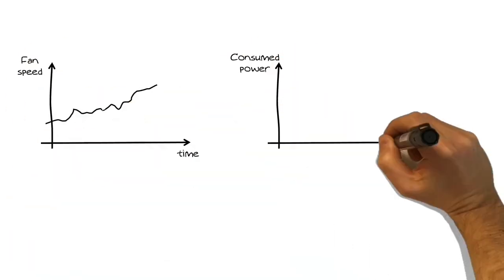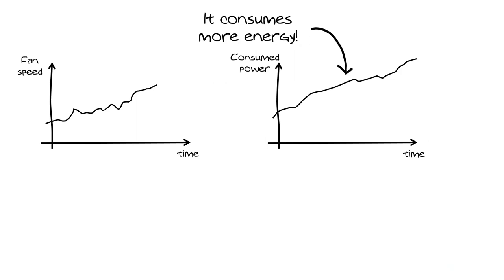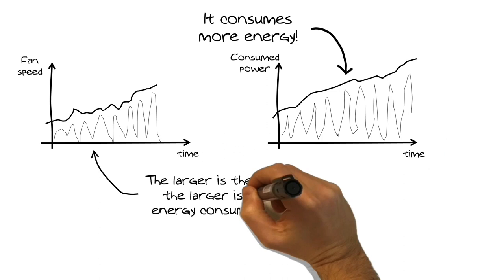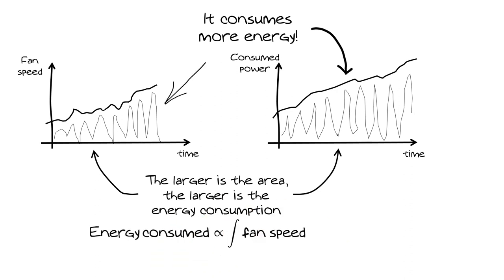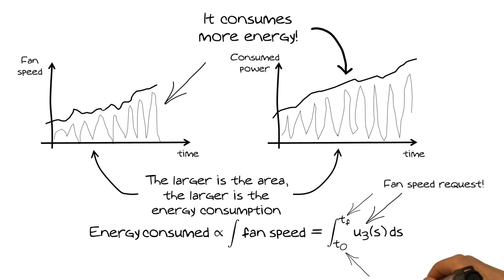We assume that for this specific fan, the higher the speed, the higher the power consumed. Therefore, to estimate the energy consumed by the fan, it is enough to look at the integral of the fan speed over time, which is something we can measure. We write this mathematically with T0 and Tf as the time instances where we turn on and off the cooling system. When the cooling system is on but the fan is off, this integral is zero. At this point, we have completely defined our performance output.